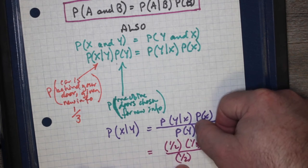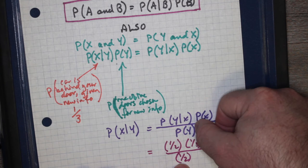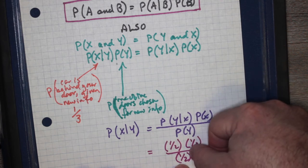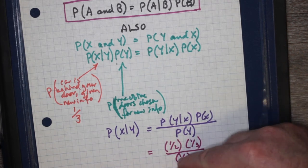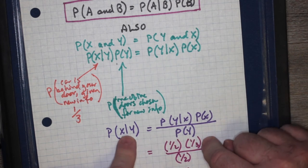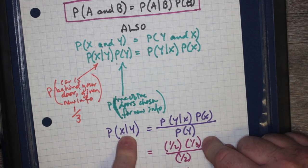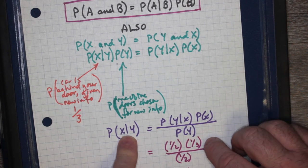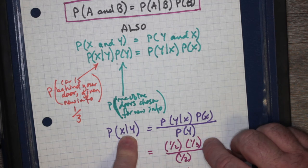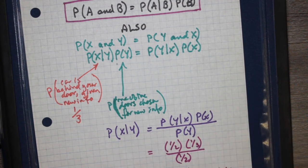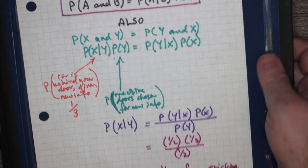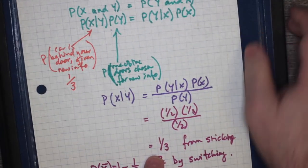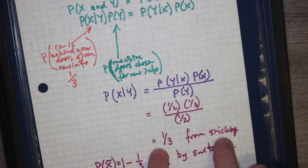The probability that Monty Hall was going to choose one of the doors for a zonk, really he only had to choose between two doors, so that's also one over two. Notice that we have a cancellation, and the probability that X given Y, that you've chosen the prize, that your first choice is the prize given that Monty Hall showed you a zonk was behind one of the other doors, actually works out to one over three because the one over two cancels. That's from sticking.